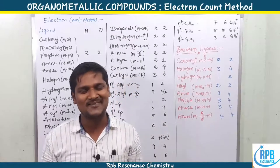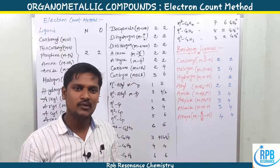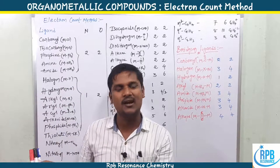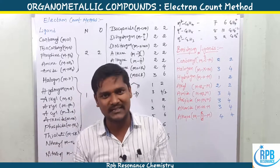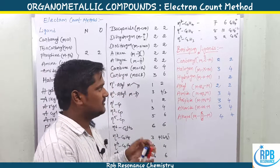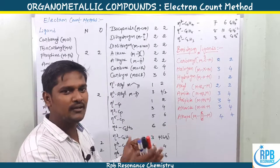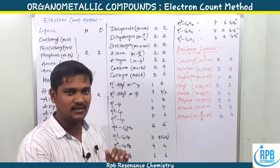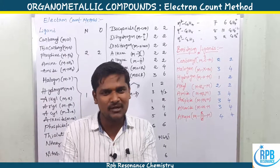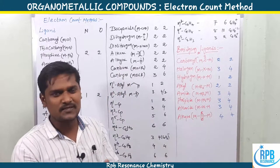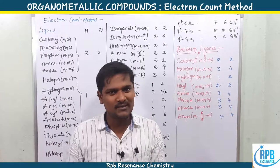Welcome to RPV Resonance Chemistry. This is lecture number two on organometallic chemistry. In the previous video, I covered the basic introduction and history of organometallic compounds, along with how to find the hapticity of different ligands. In this lecture, the content covers how to find electron counts and how to calculate electrons in different ligands, as well as how to predict the formal charge of specific ligands.